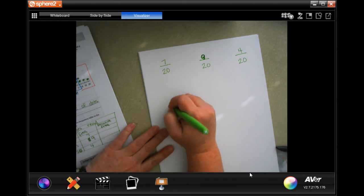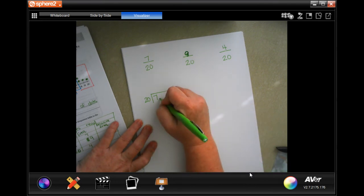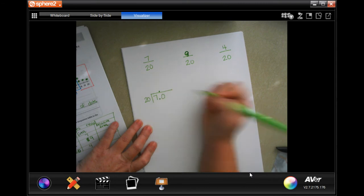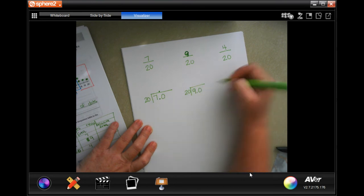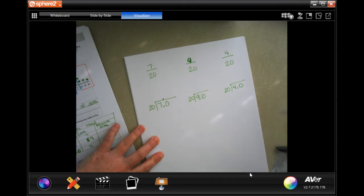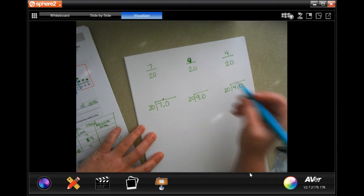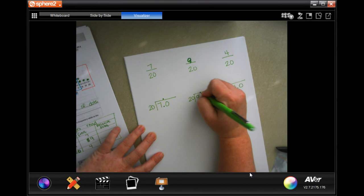We're going to put seven inside the box, 20 outside the box. Obviously, 20 does not go into seven, so we're going to put a decimal, bring it up, and put a zero. We're going to do the same thing here. Same thing for all three of them.